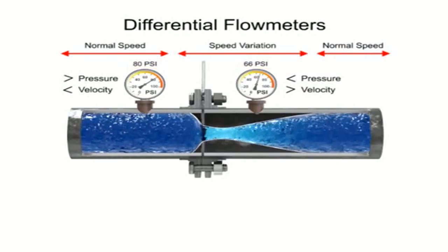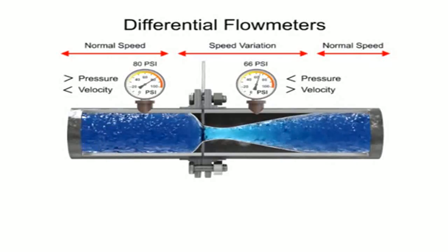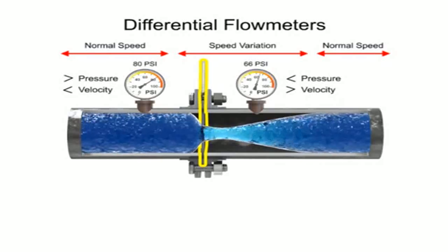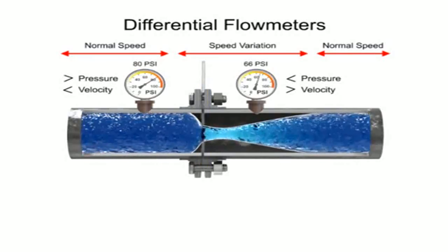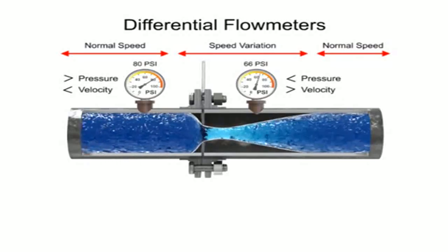As the fluid flow rate increases through the pipe, back pressure on the incoming side increases due to the restriction of flow created by the orifice plate. The pressure of the fluid at the downstream side of the orifice plate is less than the incoming side due to the accelerated flow.